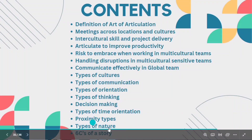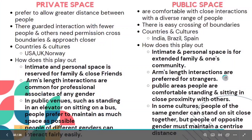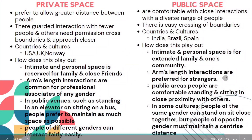So let's get started. Proximity is nothing but the space between two people. There are two types of spaces: private and public. In private space, people prefer to allow greater distance between each other. There are guarded interactions with fewer people, and others need permission to cross boundaries and approach closer.